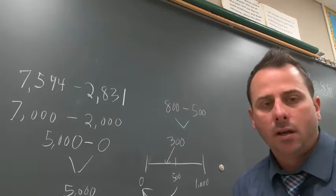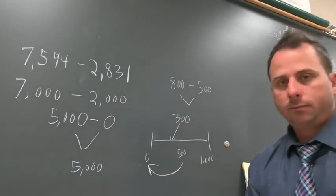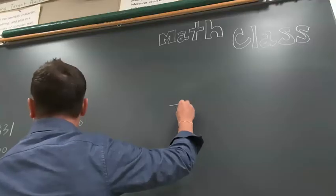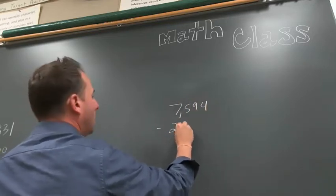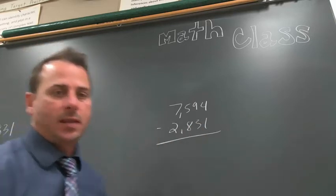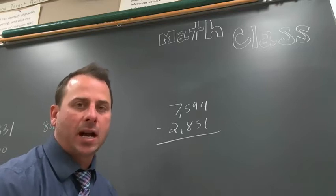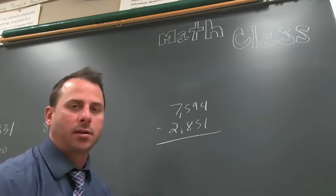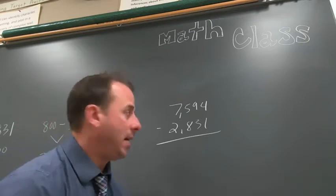Let's do the actual subtraction. We're going to investigate how close the front-end estimation was to getting the actual answer. If you remember, the estimated answer we got was 5,000.